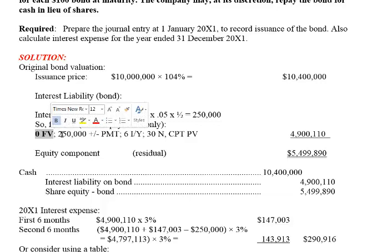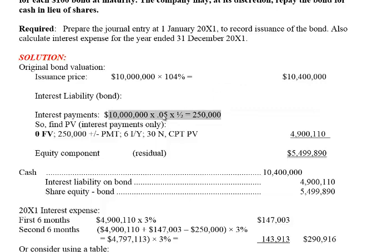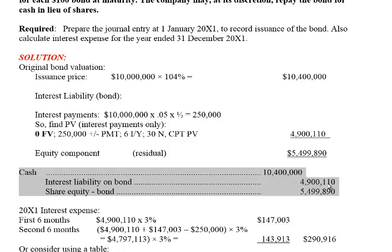They do have to make the steady stream of interest payments, which is $250,000 on a $10,000,000 bond. We use the coupon rate of 5% — not the market rate — and because it's a semi-annual bond, we multiply by a half to get the payment. We use the market rate in our present value calculation, and we're making 30 interest payments — 30 because the bond is a 15-year bond and we make two payments a year. When we compute PV, we get the present value of the interest payments only to be $4,910,000. The equity component is a residual — the difference between what we got from the investors ($10,400,000) and the present value of the interest payments — giving us $5,499,890. Our journal entry is to debit cash, credit the present value of the interest liability on the bond, and credit the share equity account for the difference.